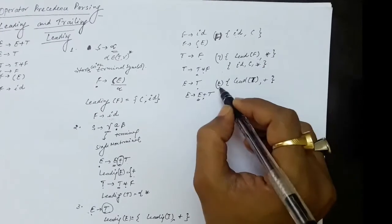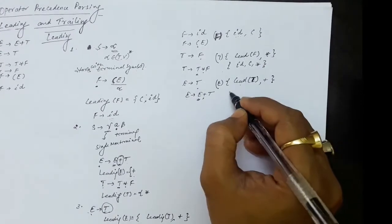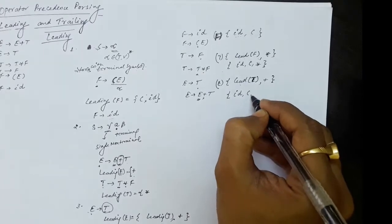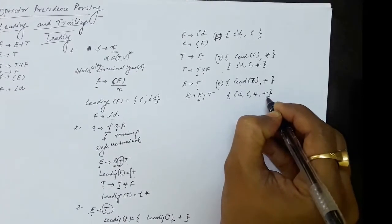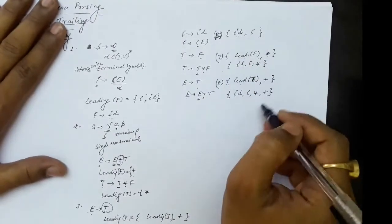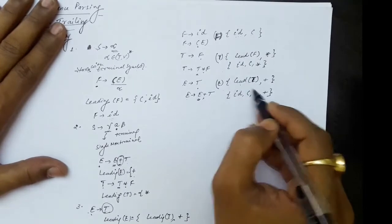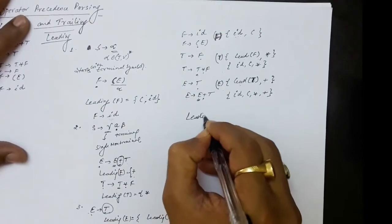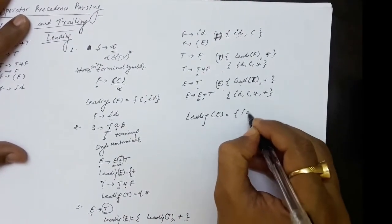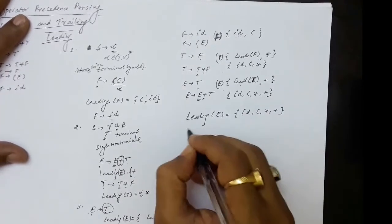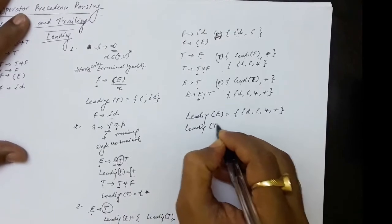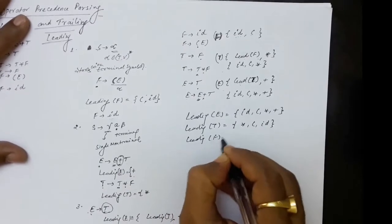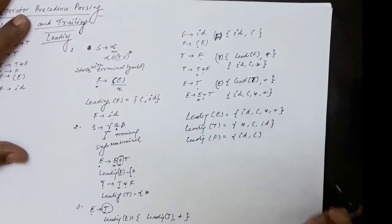Since all symbols in LEADING of T are included in LEADING of E, plus also in LEADING of E, we get the final results: LEADING of E = {ID, (, *, +}, LEADING of T = {*, (, ID}, and LEADING of F = {ID, (}. So we have computed the LEADING for the given grammar.